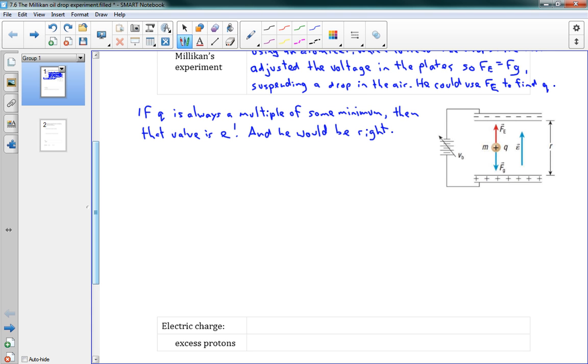And so he just did this over and over again, shot a bunch of little drops into here, adjusted his voltage so that they were just hovering in the air, and then found out what that voltage was. So his process here, we can say, to find Q, this is what he did.